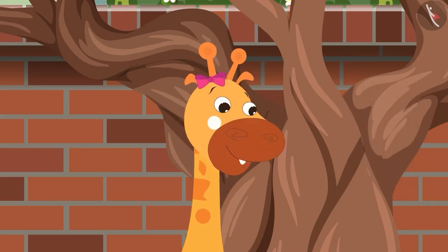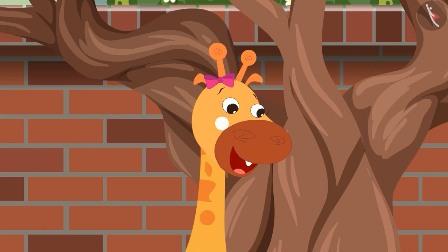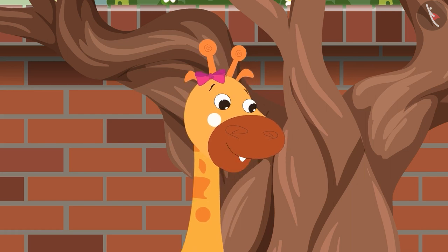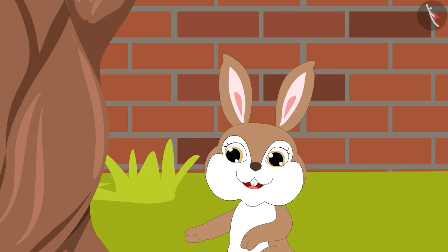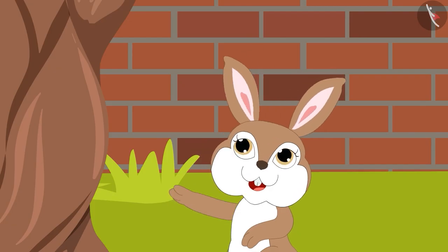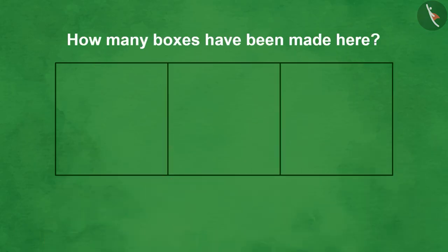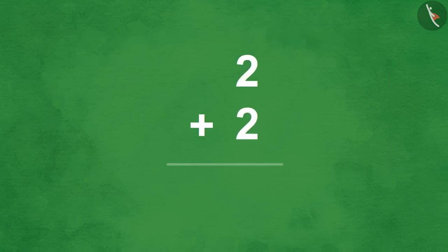Now I have question 2. Tell me, how many eyes do we have? It's very easy — 2. How many boxes have I made here? 3. Now it's my turn. 2 plus 2 is 4.